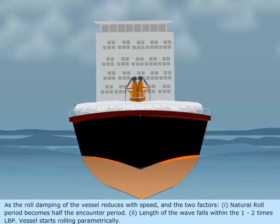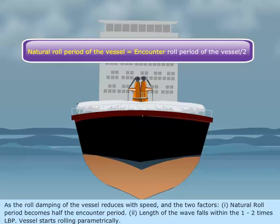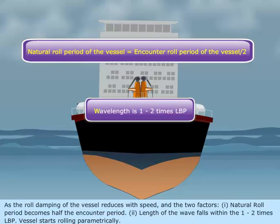one, the natural roll period becomes half the encounter period; and two, the length of the wave falls within 1 to 2 times LBP — the vessel starts rolling parametrically.